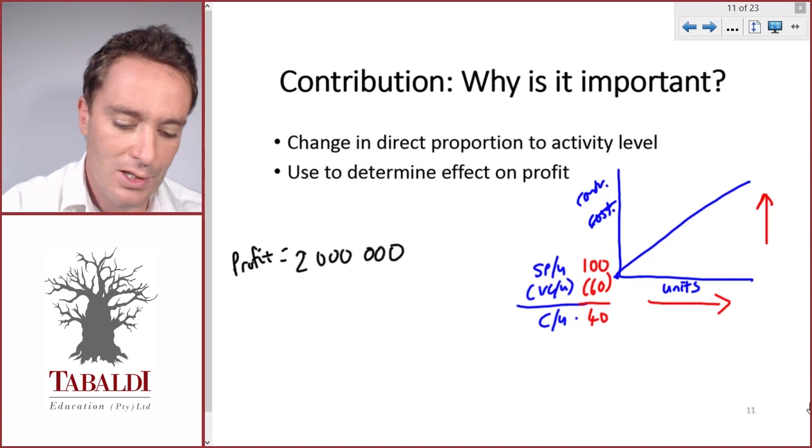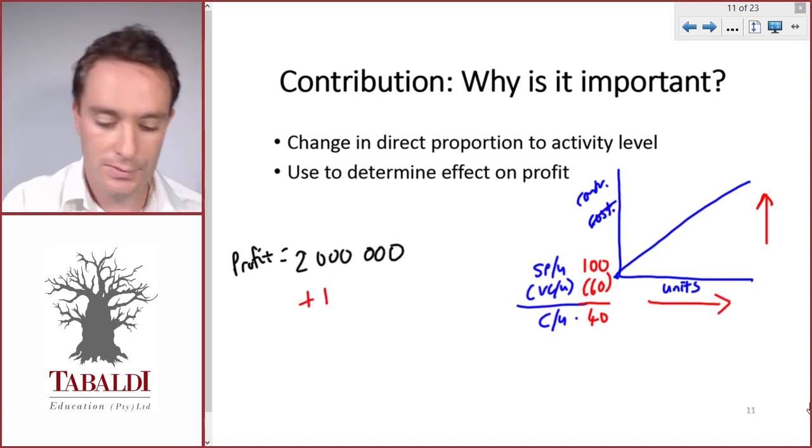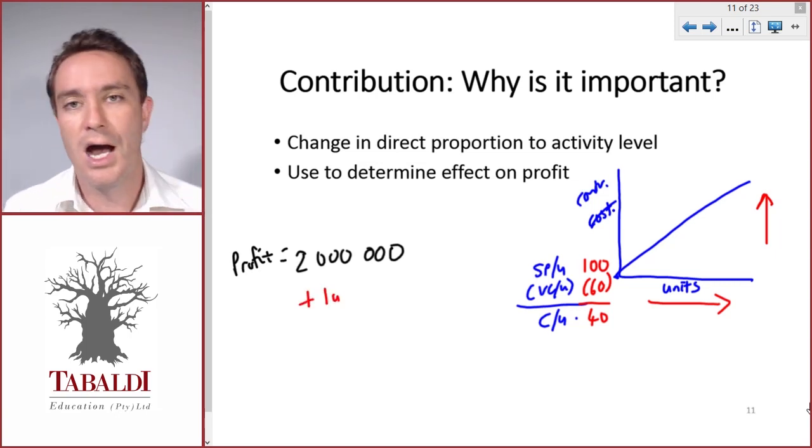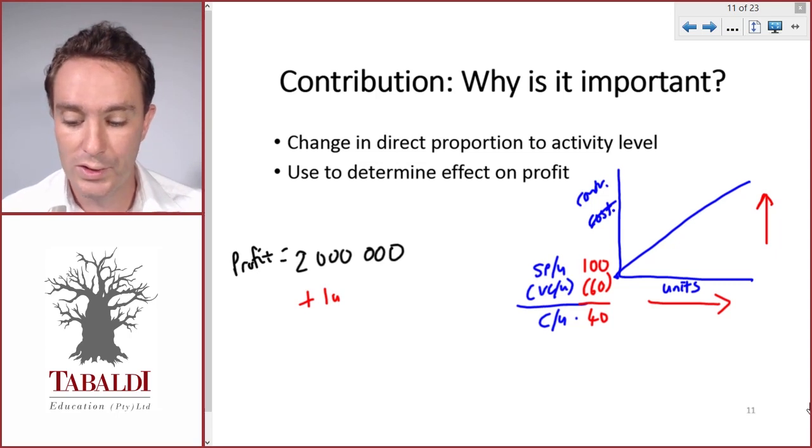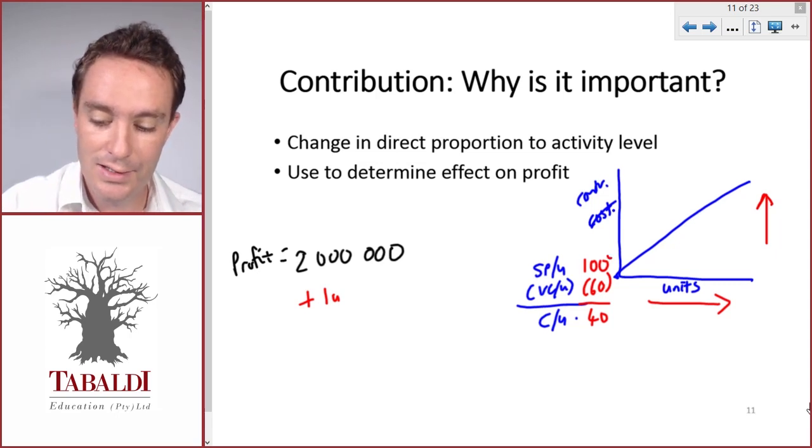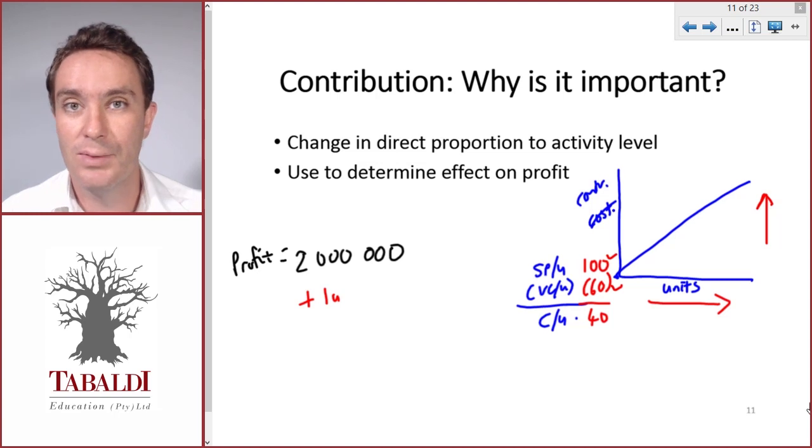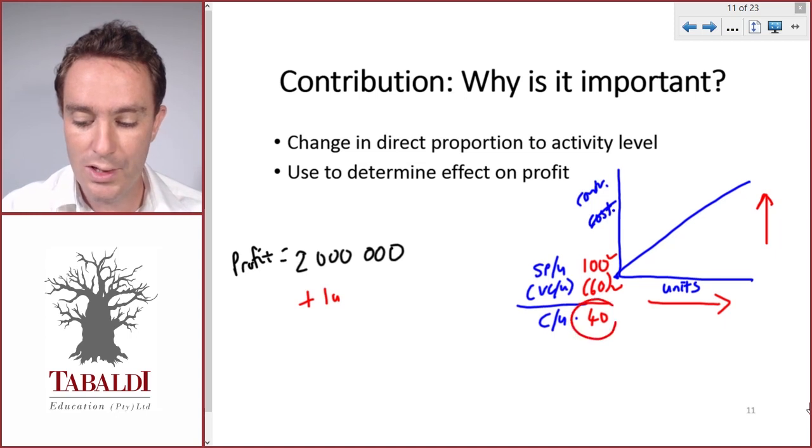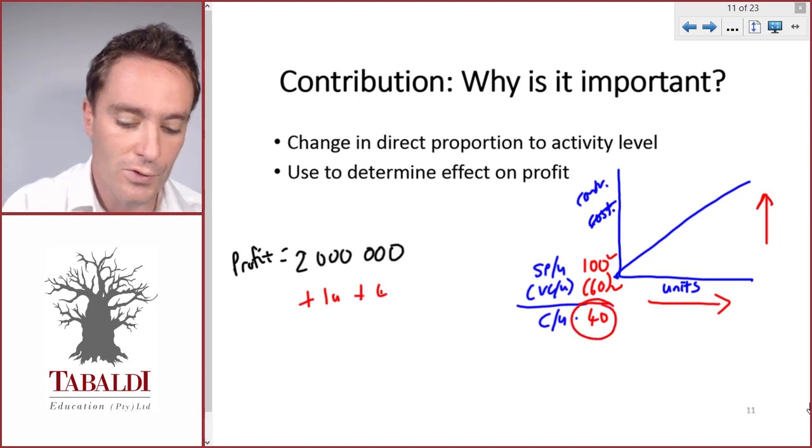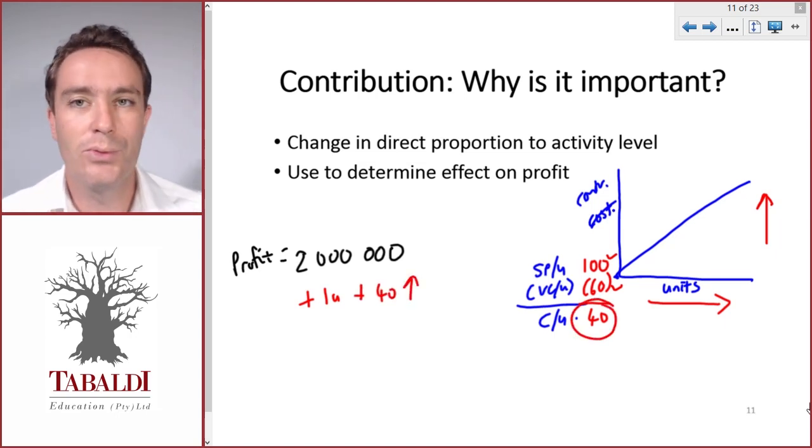If we sell one more unit, how much will our profit increase by? We'll earn additional sales of 100, we'll spend additional variable cost of 60, our fixed costs won't change because they stay fixed, so we'll earn a contribution of 40. Our profit will increase by 40.